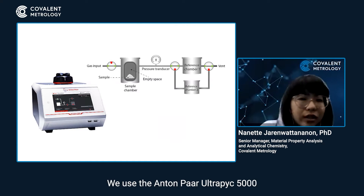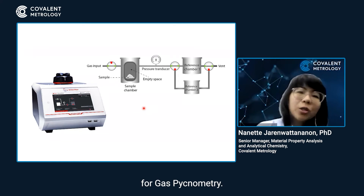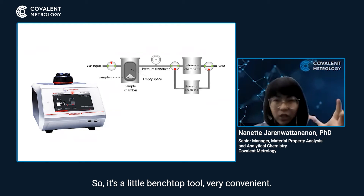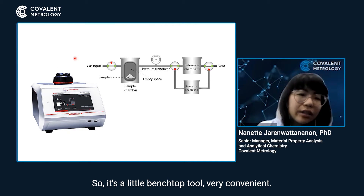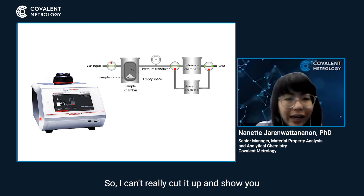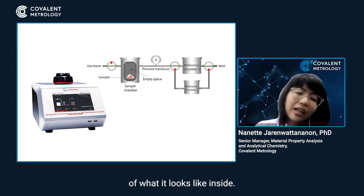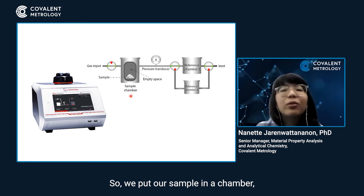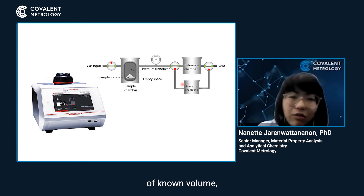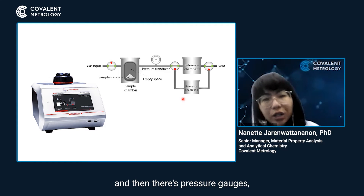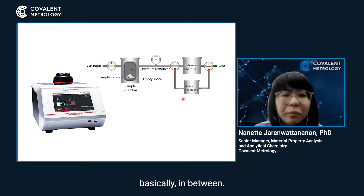We use the Anton Parr Ultrapyck 5000 for gas pycnometry. It's a little benchtop tool, very convenient. I can't really cut it up and show you, but I can give you a schematic of what it looks like on the inside. We put our sample in a chamber, and there's a reference chamber of known volume, with pressure gauges in between.